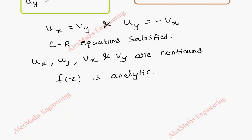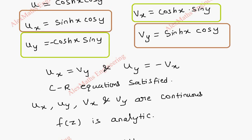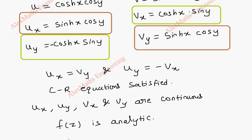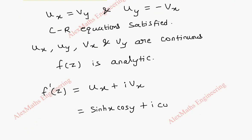And now, we also want its derivative. So, f prime of z by formula, ux plus i vx. Already, we got ux here, sinh x cos y. So, this is sinh x cos y plus i vx, which is cosh x into sin y. Cosh x into sin y. This is the f prime of z.